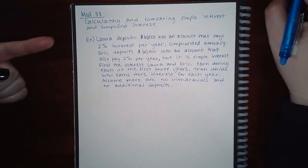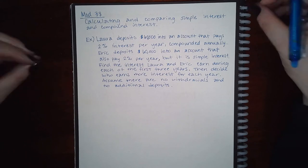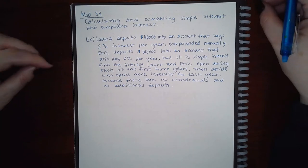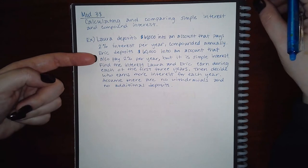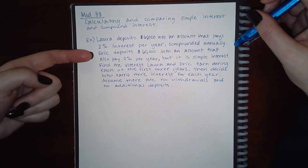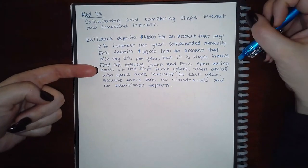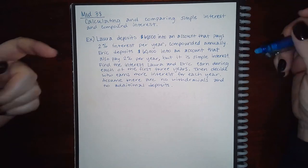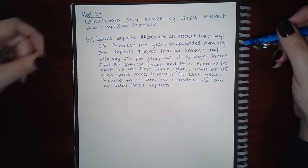We need to understand the difference between compounded and simple interest. Simple means when they calculate your interest, they only use the initial deposit — that's it. Compound interest means they use your balance at the beginning of each year. So when you deposit sixty thousand dollars in January, at the end of that year they calculate interest on sixty thousand. That interest gets added to your account, so next year they calculate interest on the higher balance. Simple interest only ever uses the initial sixty thousand dollar amount — it doesn't matter how much the account grows.